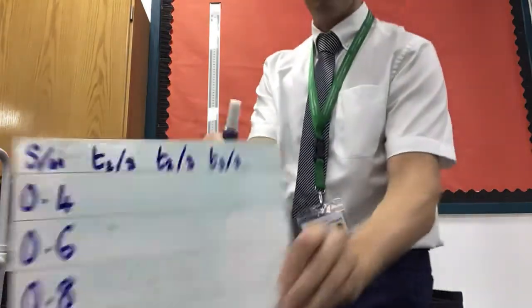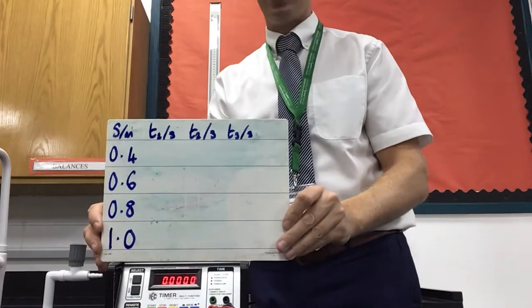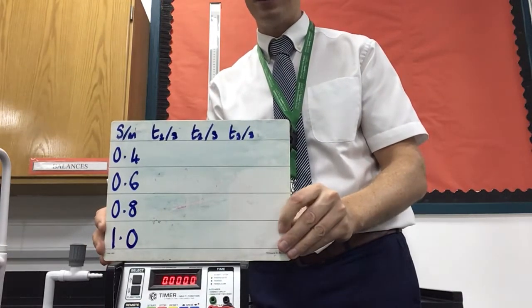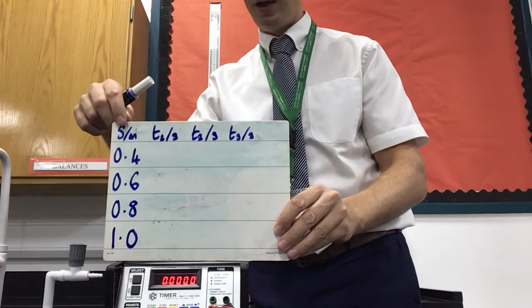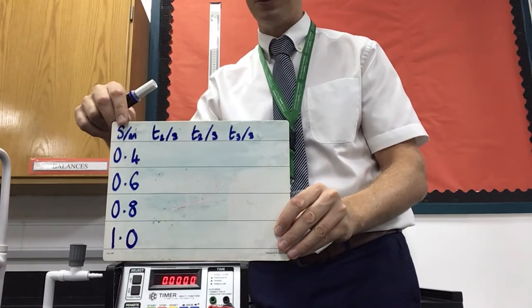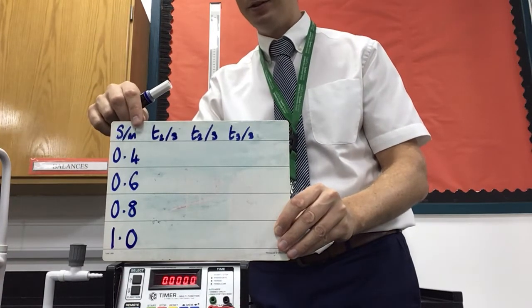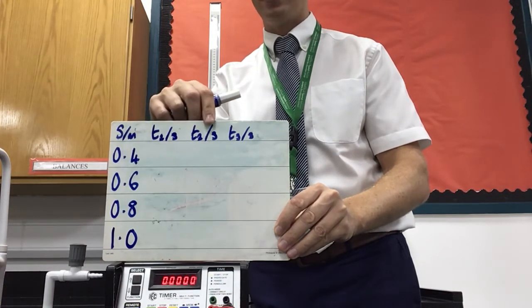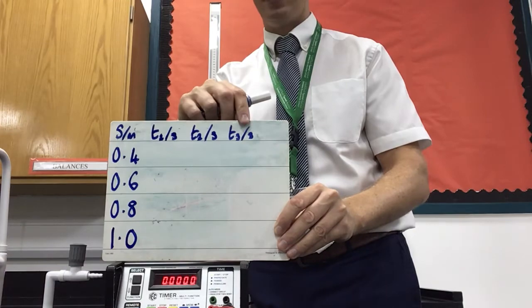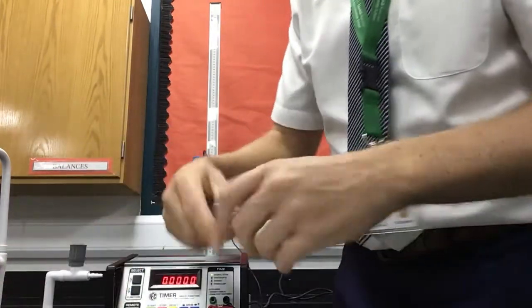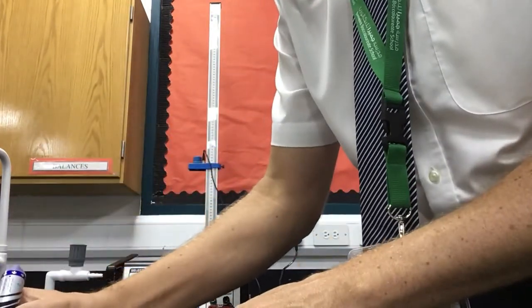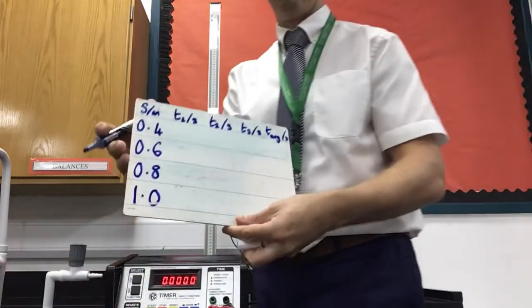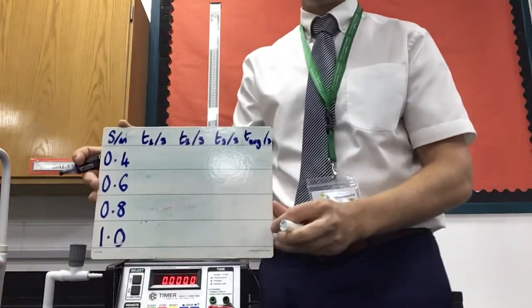I have here myself a results table that I'd like you to make a copy of, so pause the video right now and make a copy of this. It says on it, S for displacement in metres, T1 in seconds, T2 in seconds, T3 in seconds, and then you're going to have T average in seconds. This is your raw data table.